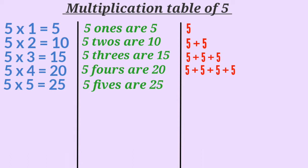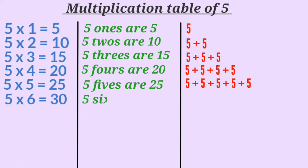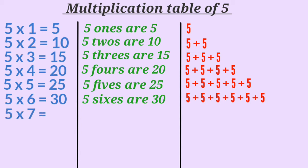So, how many times are we adding number 5 here? 5 times. 5 multiplied by 6 is 30, or 5 sixes are 30. Which means we are adding number 5 six times.